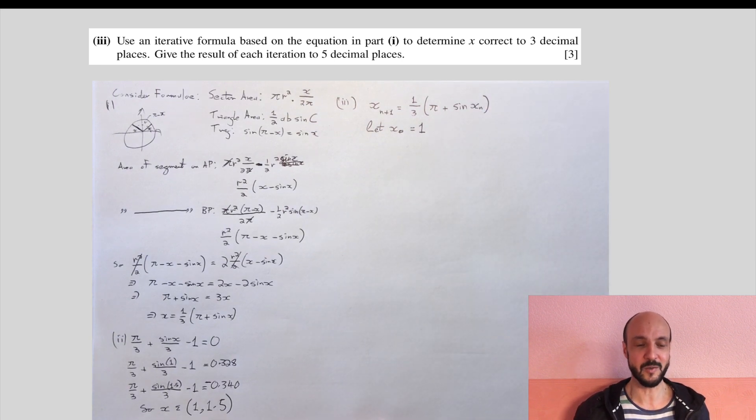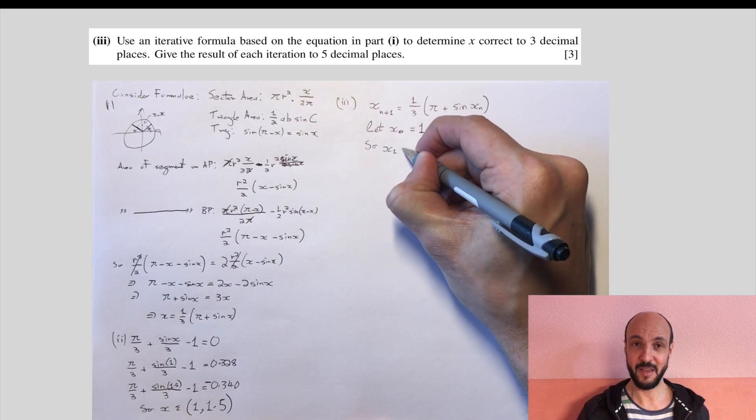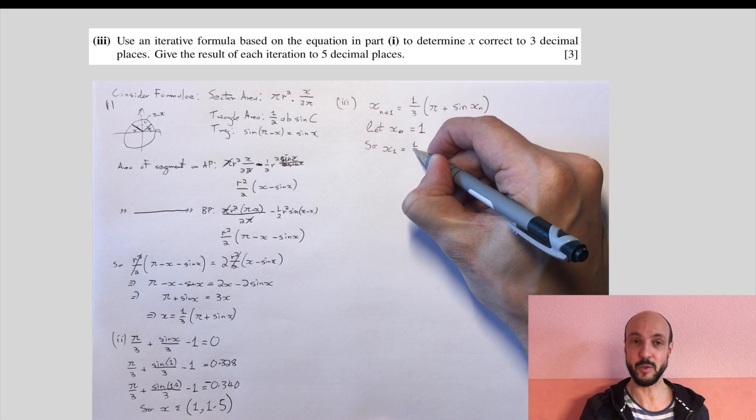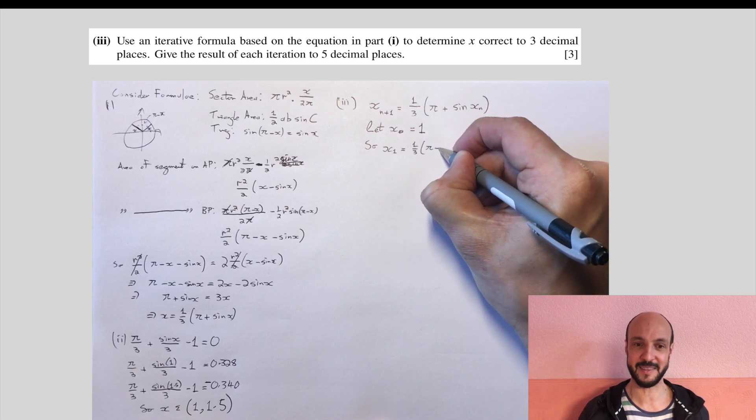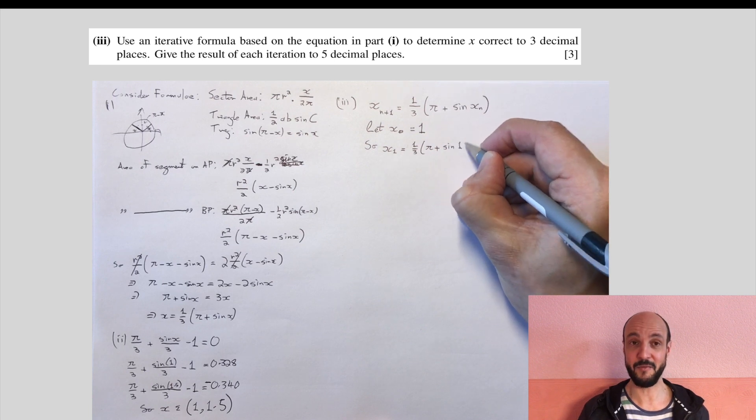So numerical methods, all we do is we say we've got this equation, x is a third of pi plus sine x. In this case, we're going to say we'll try a value of x on the right-hand side of our equation. If the value of x were correct, it would give us the same value on the left-hand side. If it's not correct, it will be away from that value.